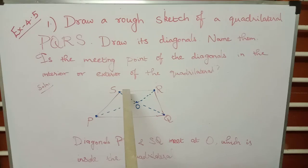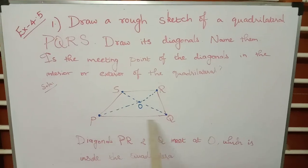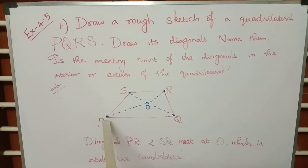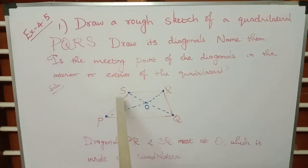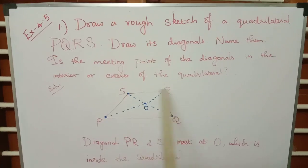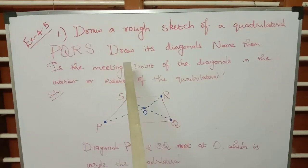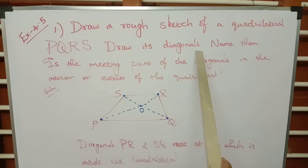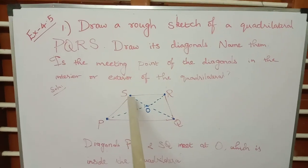So first I am going to draw a rough diagram of a quadrilateral and name it PQRS. PQRS is a quadrilateral, and next you have to draw its diagonals. So I am just drawing the diagonals.